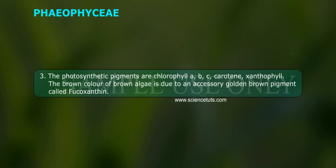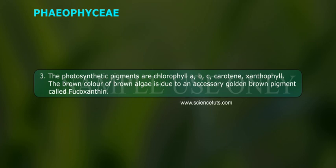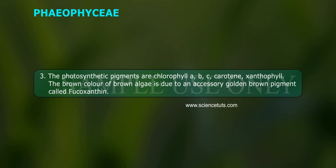The photosynthetic pigments are chlorophyll A, B, C, carotene, and xanthophyll. The brown color of brown algae is due to an accessory golden-brown pigment called fucoxanthin.